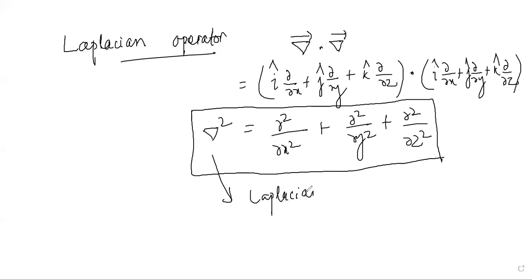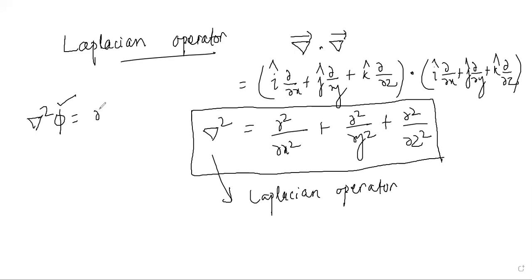You can operate this Laplacian operator on any scalar. So if you operate it on a scalar quantity φ, you can write ∇²φ = ∂²φ/∂x² + ∂²φ/∂y² + ∂²φ/∂z².